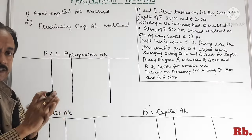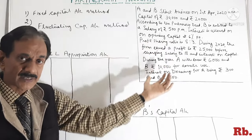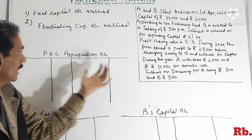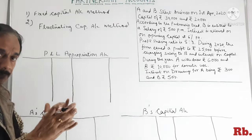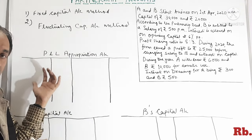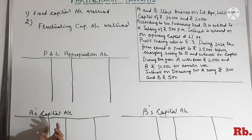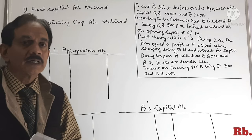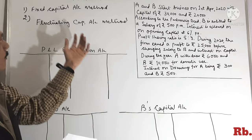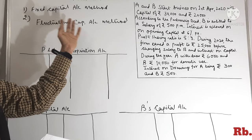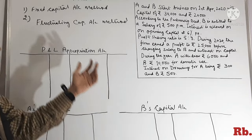In dono mein kya difference hai, yeh hum ek illustration ke through samjhenge jo mainne aapke liye likhi hai. Is illustration mein hum pahle P&L Appropriations Account bhi banayenge, jo hum pahle bhi bana chuke hain apne pichle lectures mein. Aaj yeh tarhe se revision bhi ho jayega. Iske sath hum capital accounts bhi banayenge. Is illustration ko shuru karne se pahle, main aapko thoda brief introduction deta hun about fixed capital account method and fluctuating capital account method.